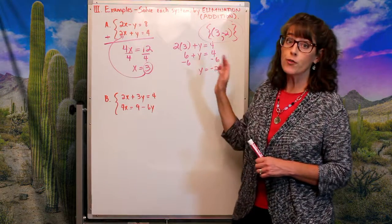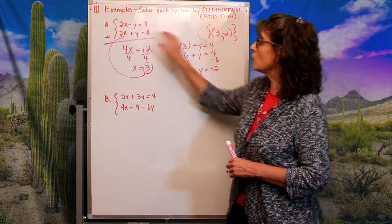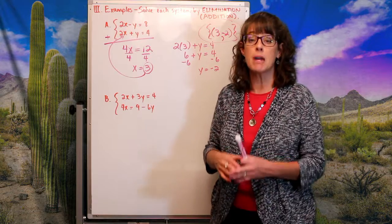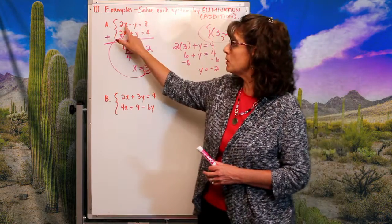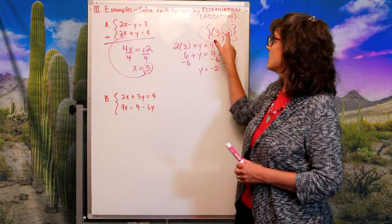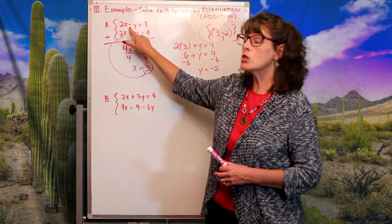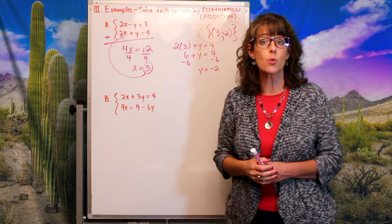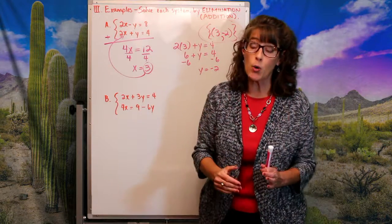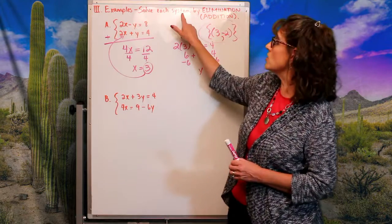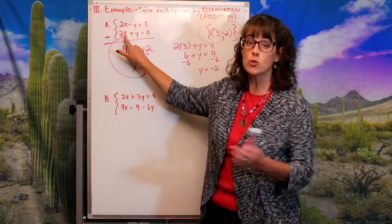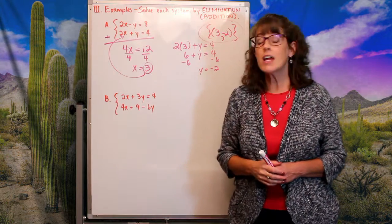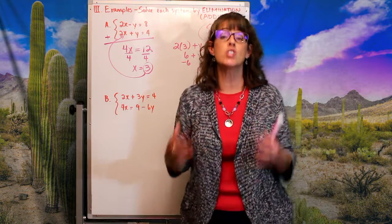This solution must work in both equations. In the first equation: 2 times 3 is 6, and subtracting a negative 2 is adding 2, so 6 plus 2 equals 8 — that checks out. In the second equation: 2 times 3 is 6, and 6 plus negative 2 is 4 — yes, that works too. So (3, −2) is a solution to the system.